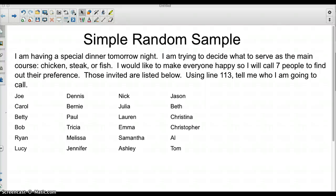Okay, so how do you do a simple random sample? You can read about the particulars in your book, but how do you actually do it? Here we have an example: I'm having a special dinner tomorrow night. I'm trying to decide what to serve as the main course—chicken, steak, or fish. I would like to make everyone happy, so I will call seven people to find out their preference. Those invited are listed below. I'm going to use line 113 of Table B to tell me who I am going to call.